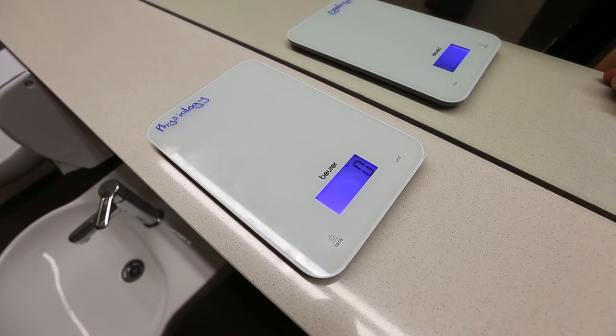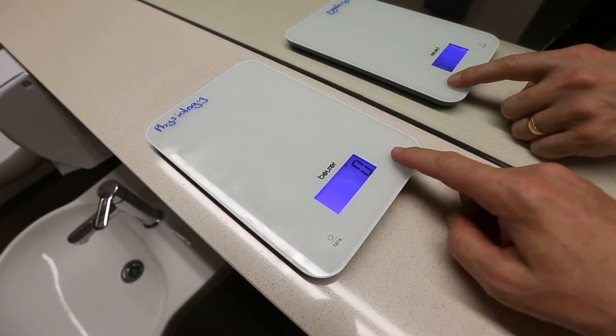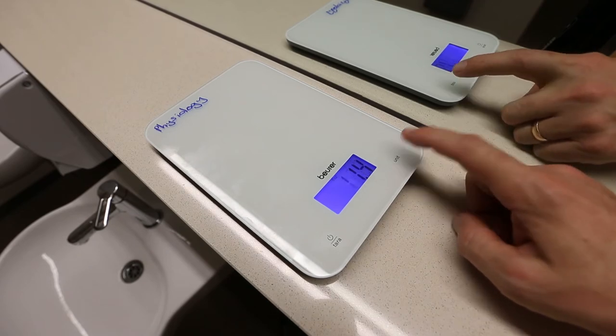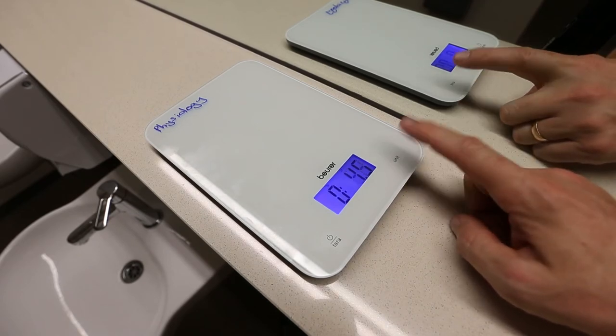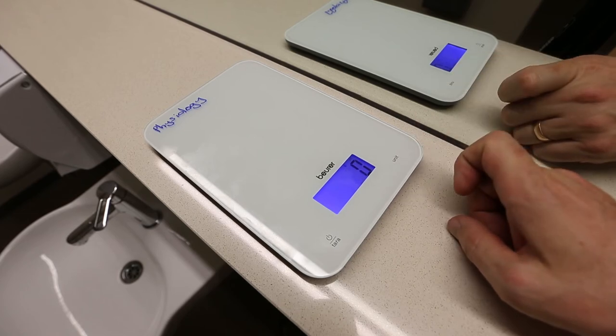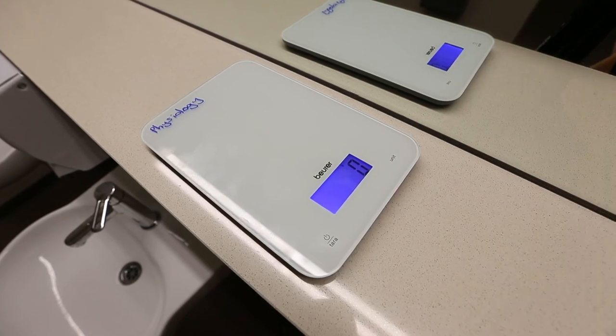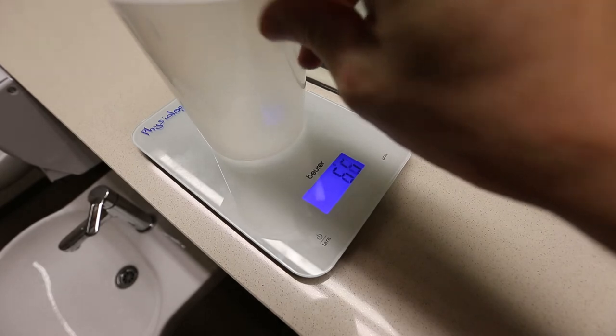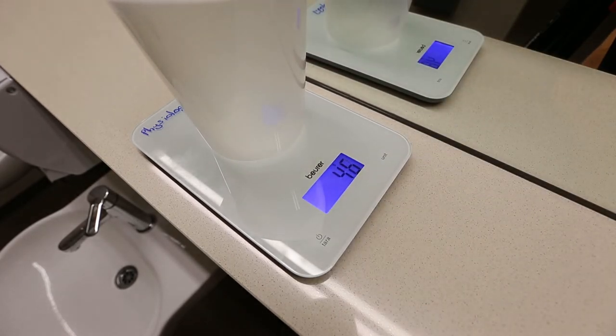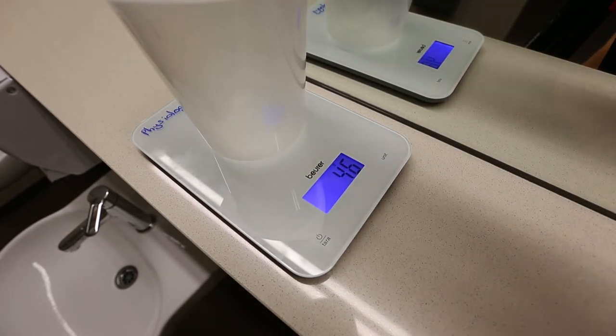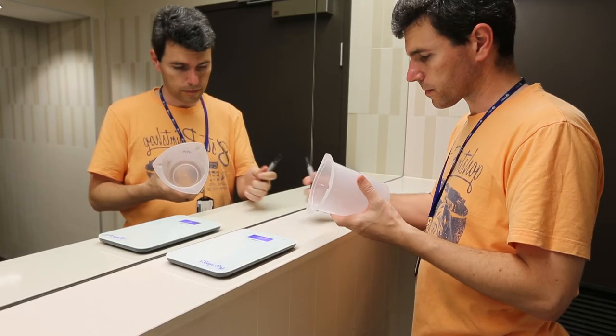The scales measure in several different units. If grams are not being displayed, press the units button several times until grams is displayed at the top of the screen. You can then place your empty beaker onto the scales. In this example, the beaker weighs 46 grams. You should write this empty weight onto the side of your beaker.